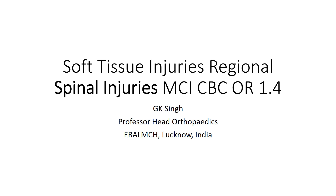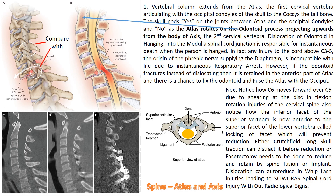We now start dealing with spinal injuries. The vertebral column extends from the atlas, the first cervical vertebra, which articulates with the occipital condyle of the skull, to the coccyx, the tailbone. The skull nods 'yes' on the joint between the atlas and the occipital condyles, and 'no' as the atlas rotates on the odontoid process, which projects upwards on the body of the axis, the second cervical vertebra. Dislocation of the odontoid in hanging damages the medulla-spinal cord junction.